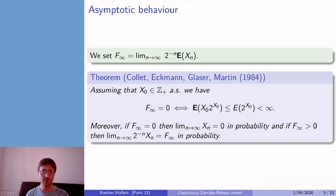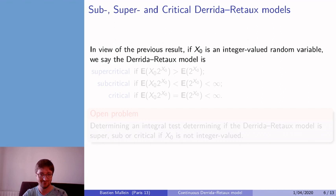On the contrary, if F∞ is positive, then the number of cars that remain and park grows like F∞ times 2ⁿ. This allows us to define supercritical, subcritical, and critical Derrida-Retaux models, depending on whether the variable Xₙ goes to zero or grows exponentially fast.